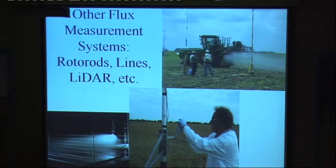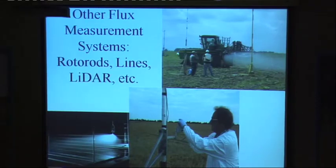There are other ways of doing this. You can put strings on towers, but that only measures flux, it doesn't measure drop size. Then we have to go to a wind tunnel to measure the drop size, so there's a disconnect. Did we do it the same in the wind tunnel as the field? Why not just measure it in the field?